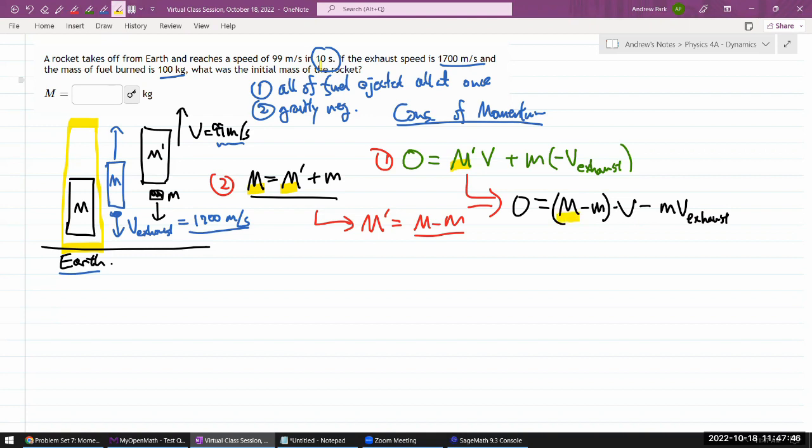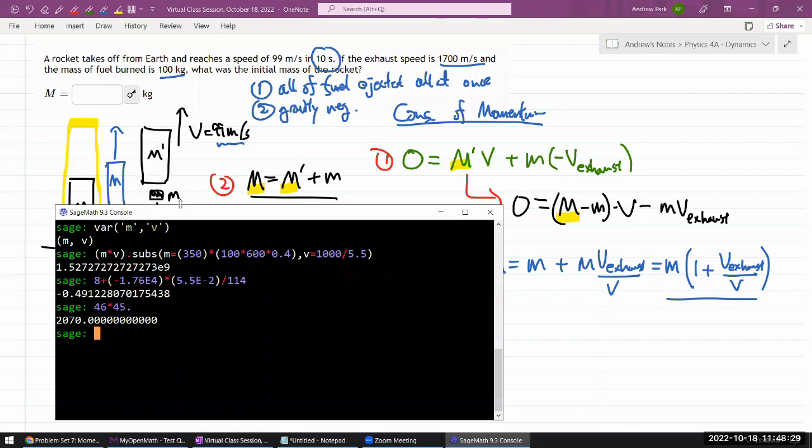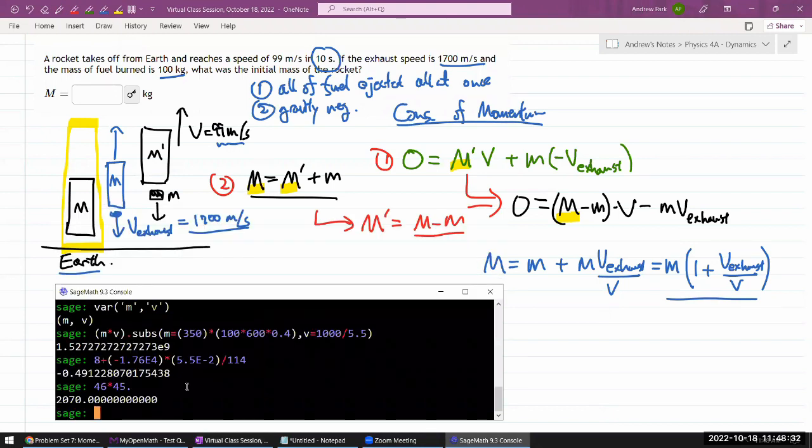So it'll be its mass times, let me use the sign to indicate the direction of the exhaust, minus V exhaust. Okay, so let's count our unknowns. We don't know the total initial mass, so we have two unknowns. I have two unknowns, two equations, I should be able to solve for it. Let me eliminate M prime using this. So I have M prime is equal to initial mass minus the mass of the fuel. Plugging that in, I get zero is equal to that combination of masses times V. So I can solve for this big M.